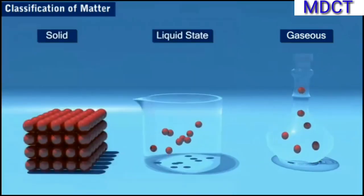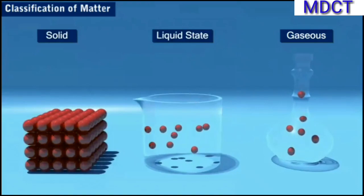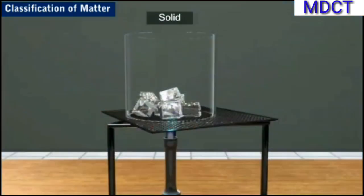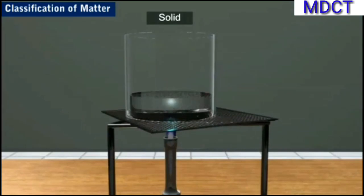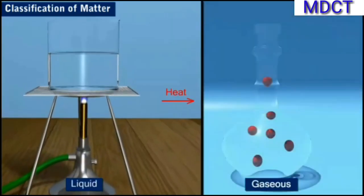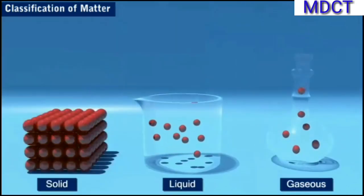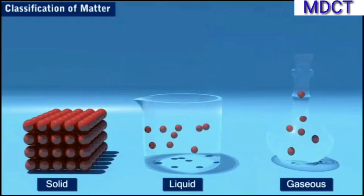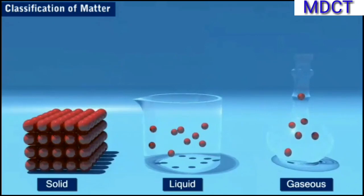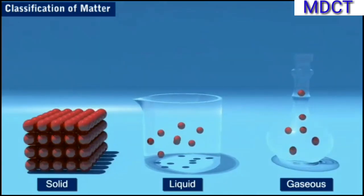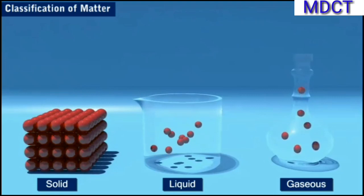The three states of matter are interconvertible by changing the conditions of pressure or temperature. For example, on heating, a solid changes to liquid. Liquid on further heating changes to gaseous state at normal atmospheric pressure. Similarly, in the reverse process, gas on cooling changes to liquid, and on further cooling, liquid changes to solid.